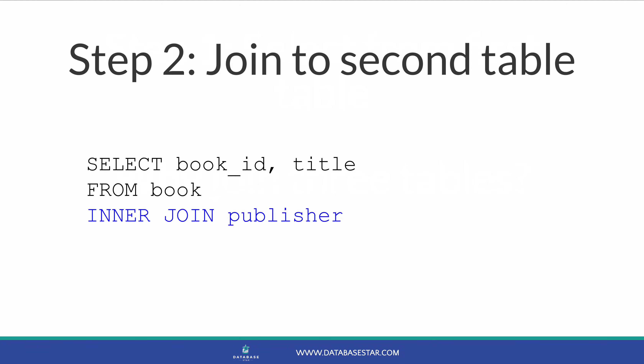Step 2 is to join to the second table. We do this by specifying the type of join after the FROM clause and then the table name. You can do either an INNER JOIN, a LEFT JOIN, or a RIGHT JOIN. There are a couple of other join types, but in most cases your join will be one of these three types.